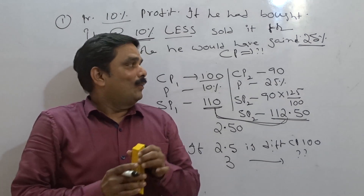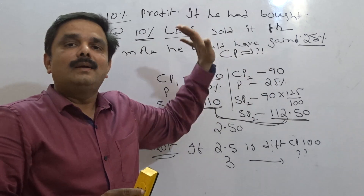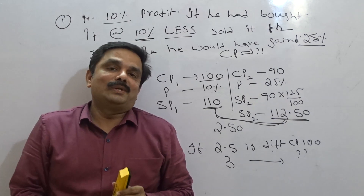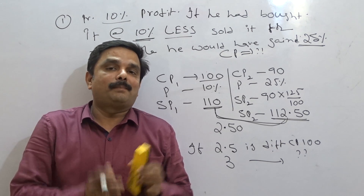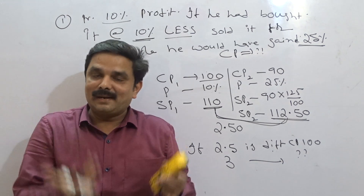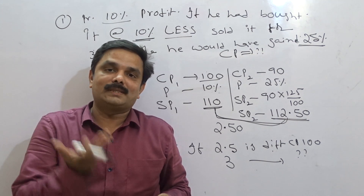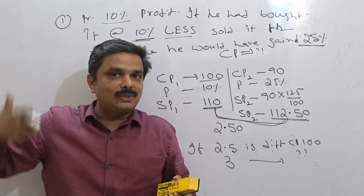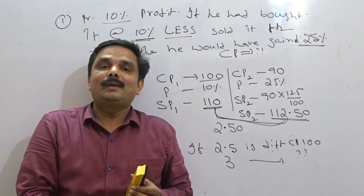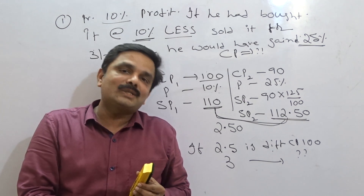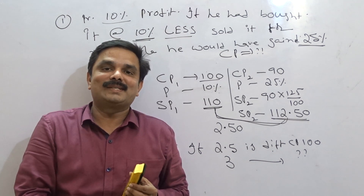Hope you got the idea. Whenever you come across these types of questions in an examination, taking 100 rupees as the cost price is the best approach. In the next video, I am going to discuss other models in profit and loss, such as questions where the cost price of 11 articles equals the selling price of 9 articles. I will cover two to three more videos to fully clear the concept of profit and loss. Thank you very much.